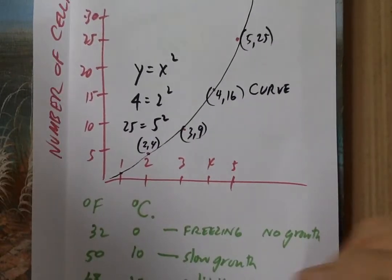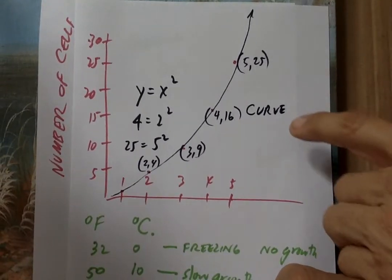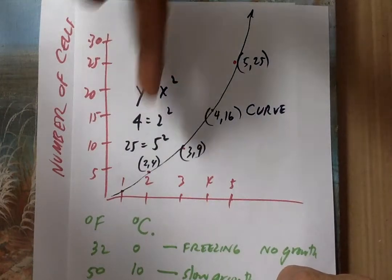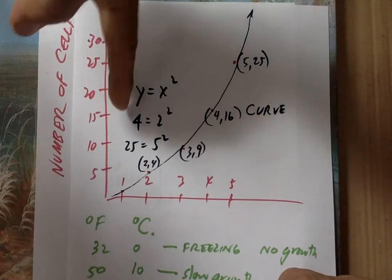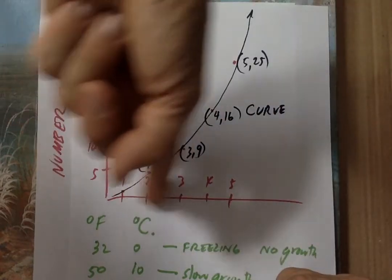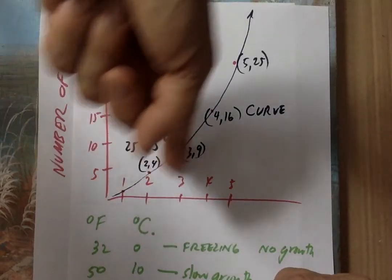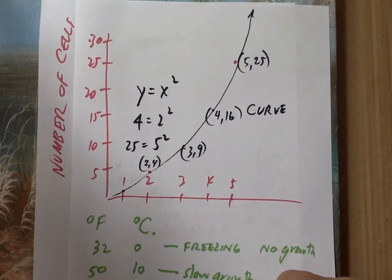You can see something about that right here. If you have something y equals x squared, whatever you put here is the 1. 1 squared is 1, 2 squared is 4, 5 squared is 25. So you go over 5 up to 25. So that's why this is, anytime you have a curve, it's exponential growth.